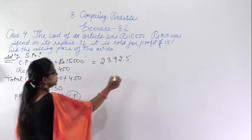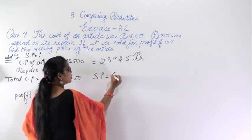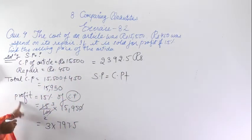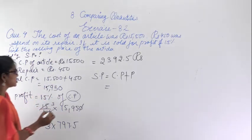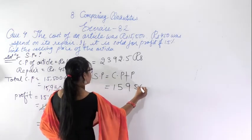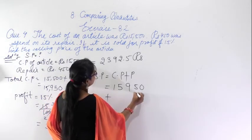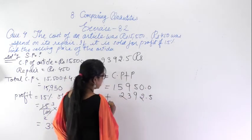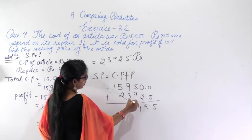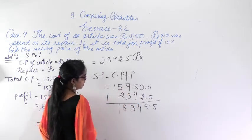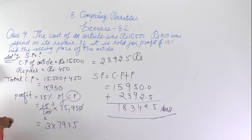The profit is Rs 2,392.5. Now we have to find the selling price. The selling price equals the total cost price plus the profit. Total cost price is 15,950 and profit is 2,392.5. Adding these: 0 plus 5 is 5; 5 plus 2 is 7; continuing the addition gives the selling price. Adding 15,950 plus 2,392.5 gives Rs 18,342.5. This is the selling price of the article.